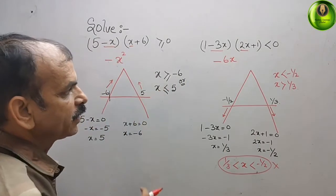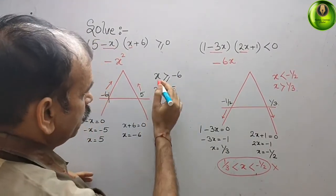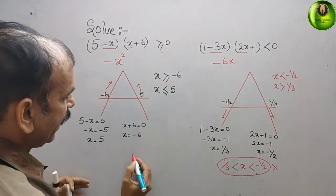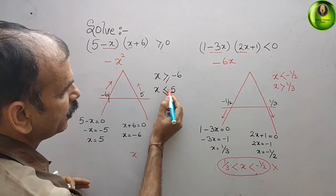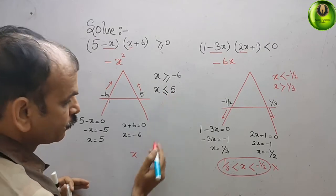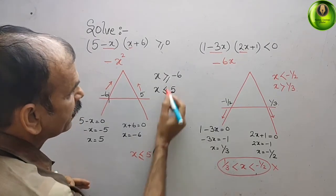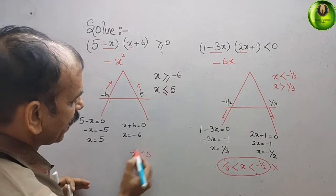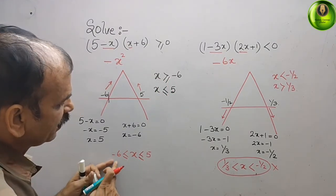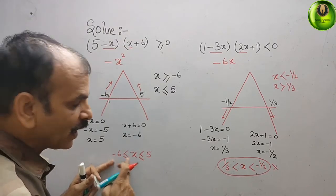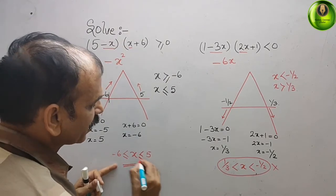But if we go back and check the first problem: we have x less than or equal to 5, and x greater than or equal to minus 6. You can see minus 6 is on the left side and 5 is on the right side — these two conditions do overlap, and so they form a valid range.